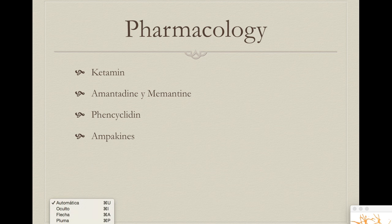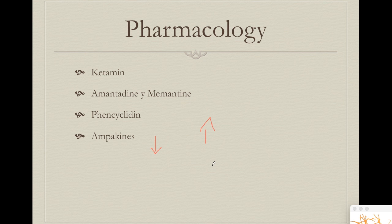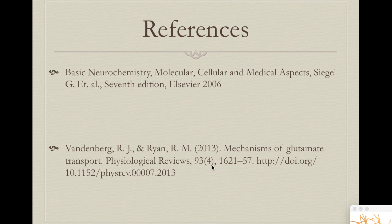Finally, we have ampakines. Ampakines are very curious drugs — they can activate AMPA receptors when glutamate is at low doses in the synaptic cleft, increasing glutamate's affinity and activity even at low concentrations. They are very useful in memory deficits. However, ampakines have another property: when glutamate is really high in the synaptic cleft, they block part of its activity, making them useful for patients developing chronic pain, where excessive glutamate drives long-term potentiation toward constant pain sensation.